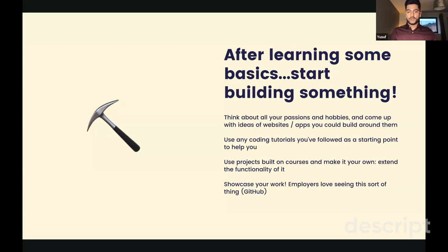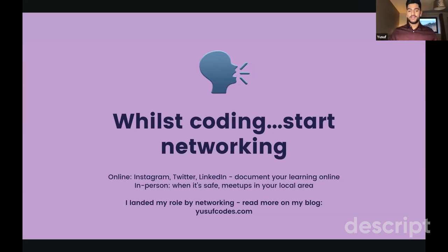If building from scratch is daunting, you could take something you've already built on a course and extend it — add a new feature to an app you've already got. That way you're not starting completely from scratch, which makes it less daunting. I'd also recommend showing your work online. There are ways to upload your code for people to see — getting it from your local machine to somewhere like GitHub — so you can share a link with employers. Employers love seeing people document their code online.